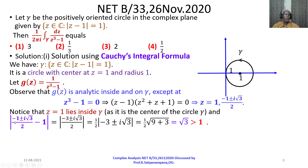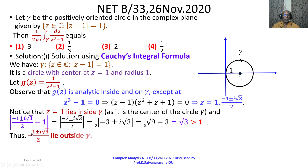We compute the modulus of (−1 ± i√3)/2 minus 1, which equals (1/2) times the modulus of (−3 ± i√3). That equals (1/2)√(9 + 3) = (1/2)√12 = √3. Since √3 is greater than 1, these poles lie outside gamma. Thus (−1 ± i√3)/2, which are omega and omega squared, lie outside gamma.